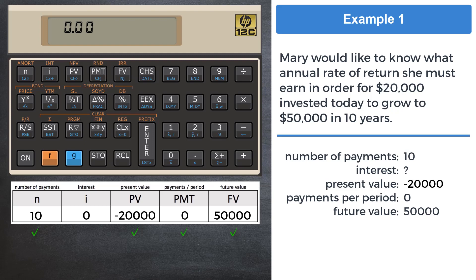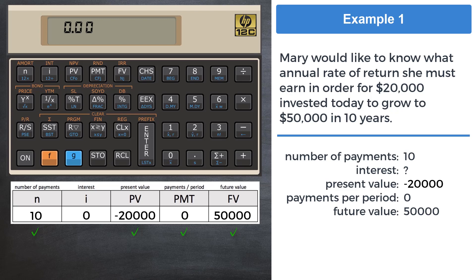Now we're ready to calculate the interest. That is easily done with a single press of the key I for interest. The standard model HP 12c will take a few seconds and display the word running while it calculates the answer. 9.60 refers to 9.6% interest, and that is the final answer.